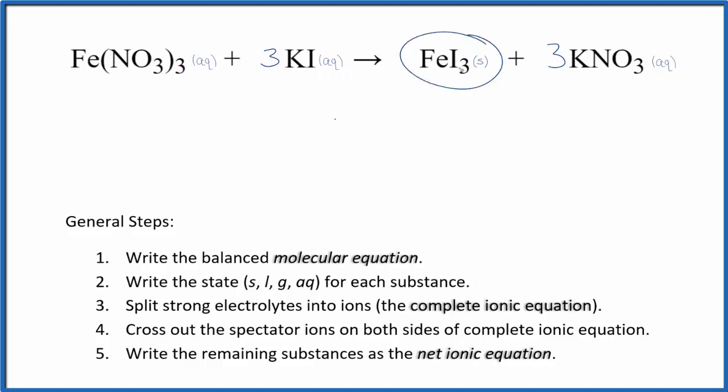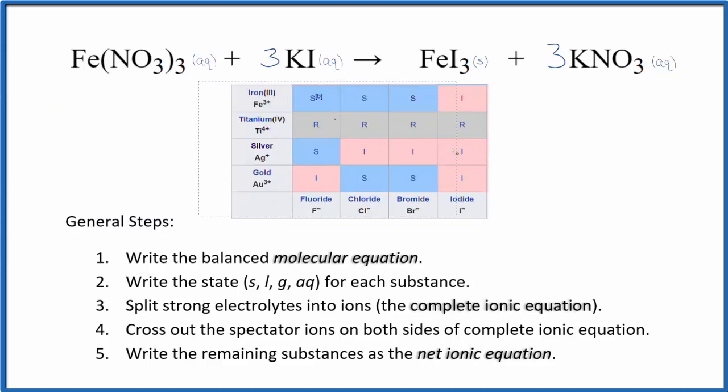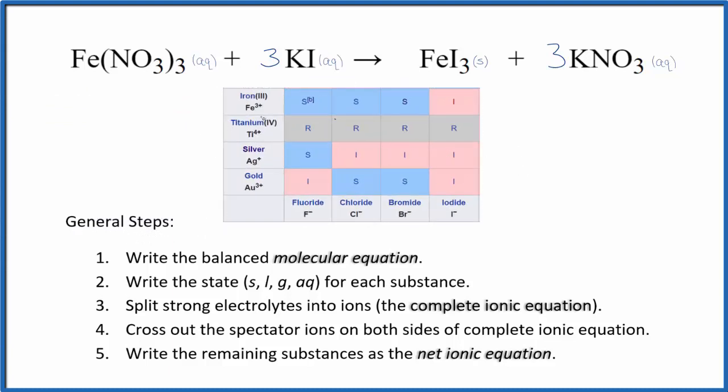This iron(III) iodide, though, if you look this up on a chart for solubility, you'll see here this is just a portion of a chart. We have our iron(III), and then we have our iodide ions. We go across and up. That I means it's insoluble. So it's not going to dissolve. It's going to stay as a solid. So we'll have this precipitate form when these two substances react.